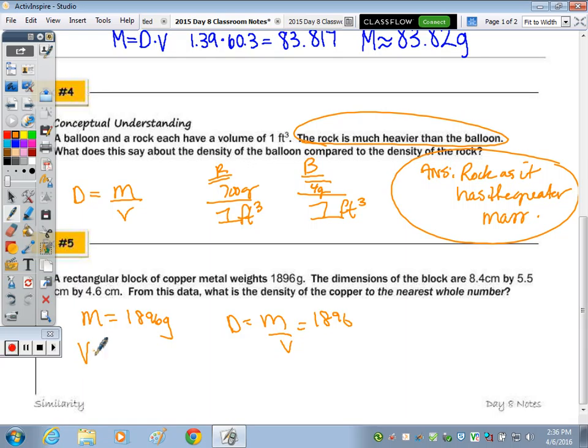So we have volume equivalent to 8.4 times 5.5 times 4.6. So we're going to get 1,896 divided by our volume here, which is 212.52 cubic centimeters. Our density is going to be to the nearest whole number, so approximately how many grams per cubic centimeters? Nine.